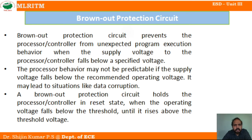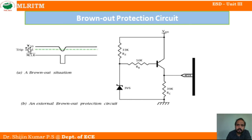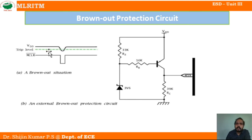To summarize, brownout means the voltage is falling below a particular level, and the resulting behavior cannot be predicted. Looking at the circuit diagram — in Figure A, we can see a brownout situation. The voltage is being provided, and at a certain point it begins to reduce, maybe due to a change in supply voltage or a change in load.